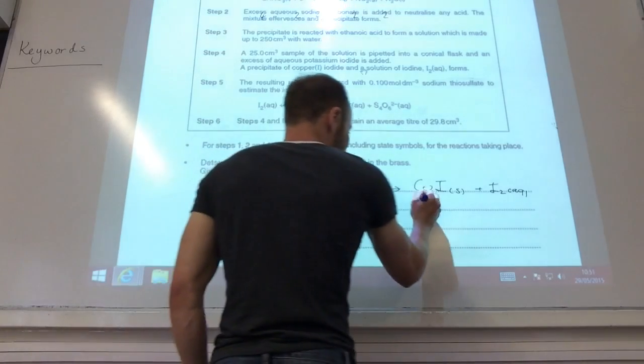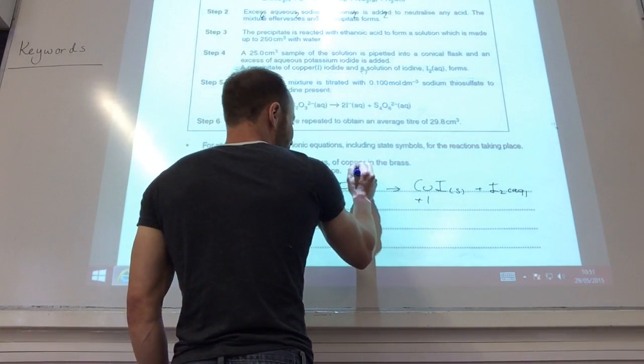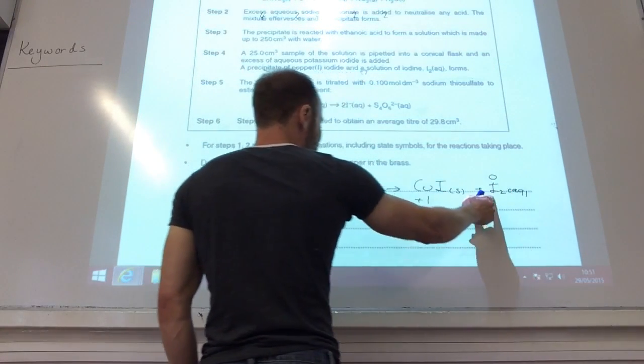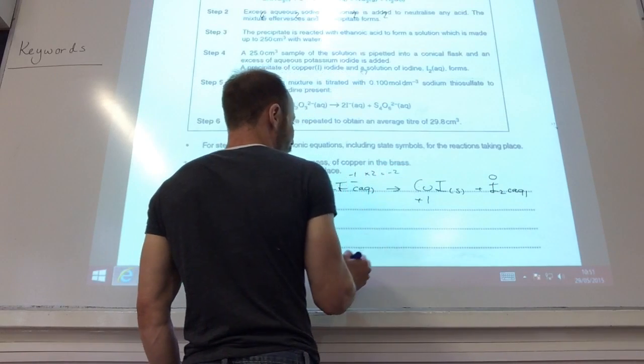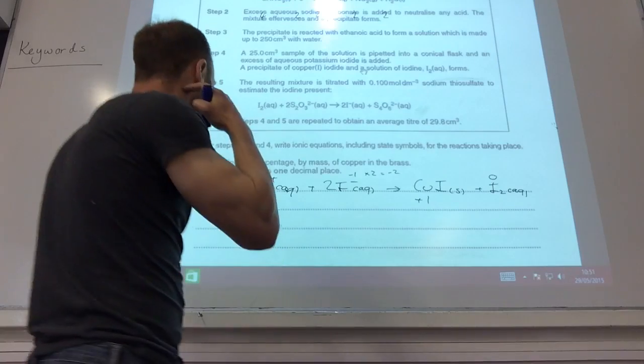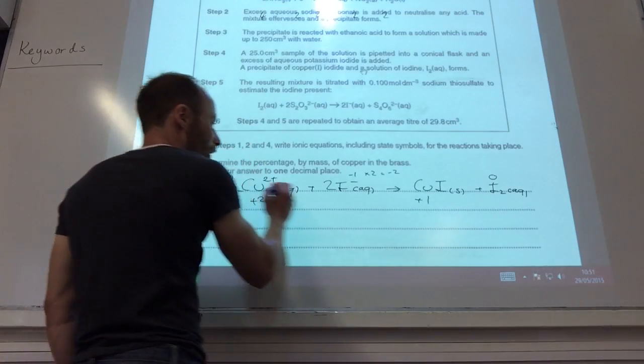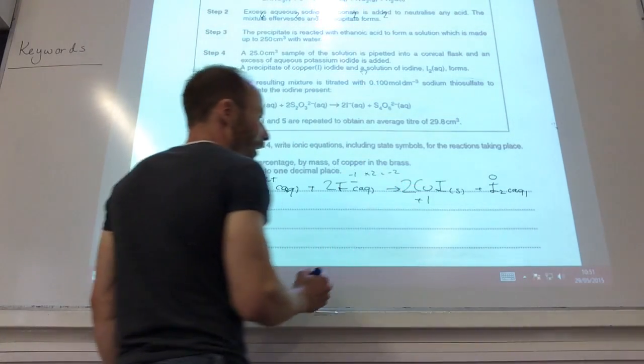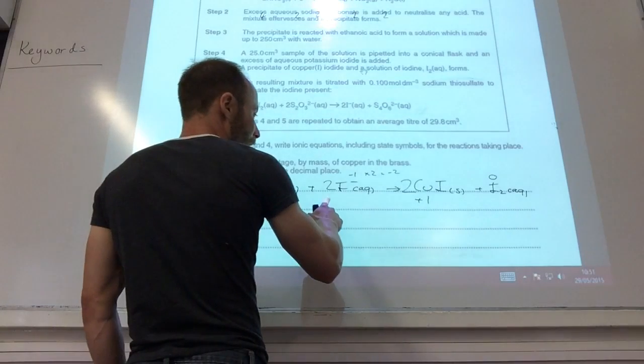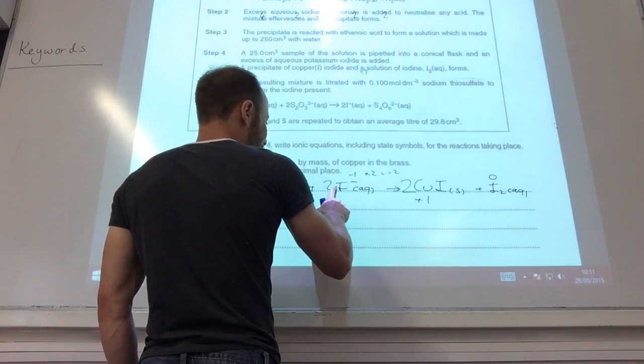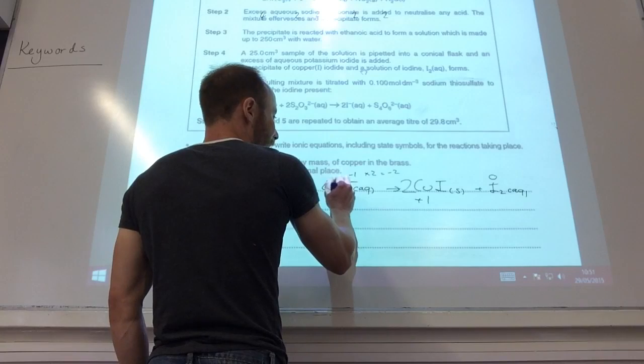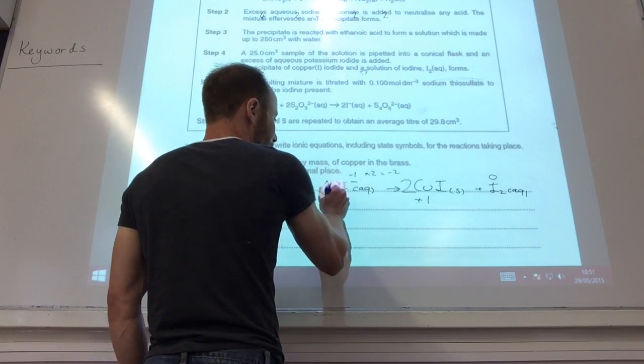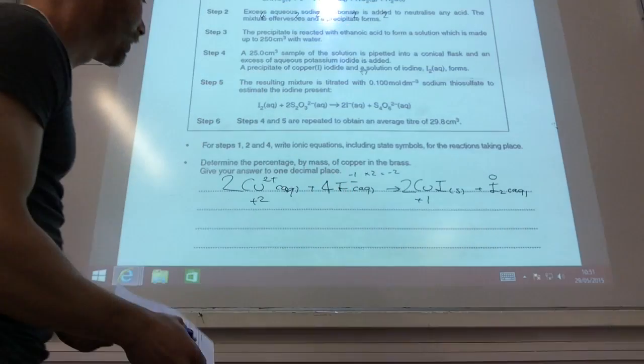So to get that to balance, if you, copper's plus two there and plus one there. Iodide is minus one there and zero there, but I've got two of them. So minus one times two is the change of minus two overall. So I've got to times my coppers by two as well. And in order to get that to balance, therefore, I need that one to become four, like so.